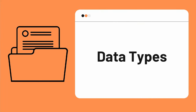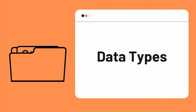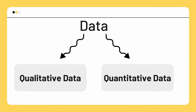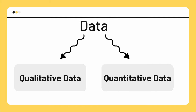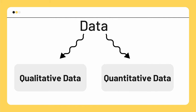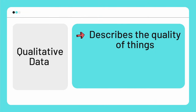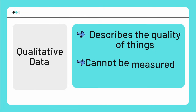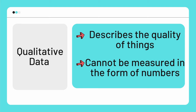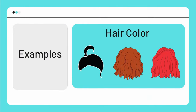Moving on to different types of data in statistics — data can be broadly divided into two parts: qualitative data and quantitative data. Qualitative data, as the name suggests, describes the quality of things, which means it cannot be measured in the form of numbers. For example, color, which could be black, brown, or red.